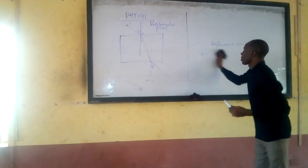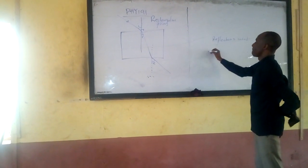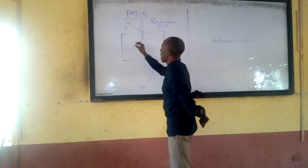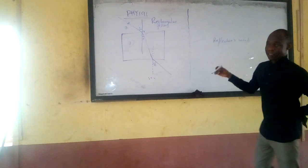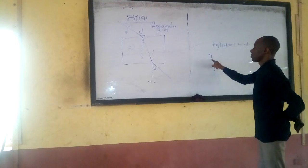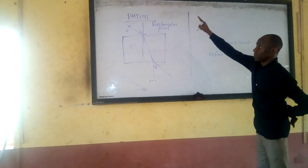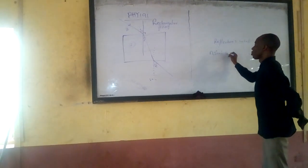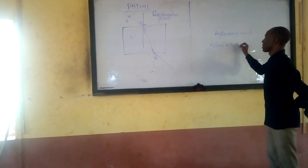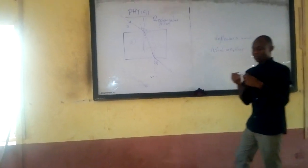Snell's law is very important. We can write it in another form. If we call this medium 1 and this medium 2, we can write Snell's law as n1 times sin(i) — the angle in medium 1 — is equal to n2 times sin(i) — the angle in medium 2. That is still Snell's law.